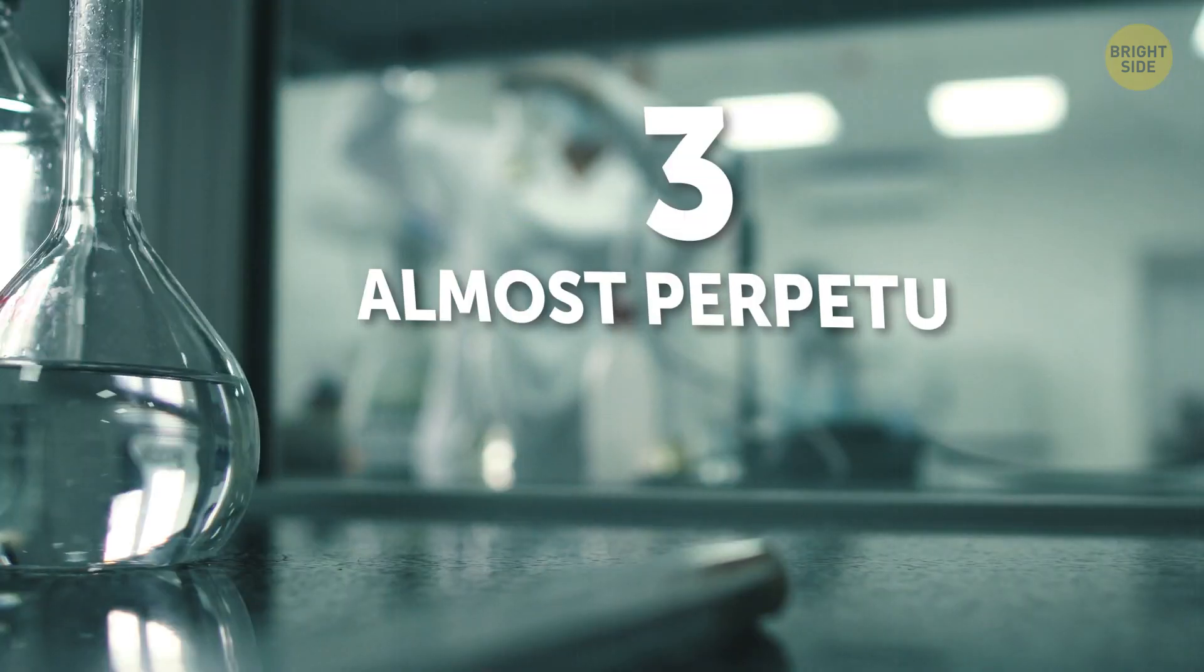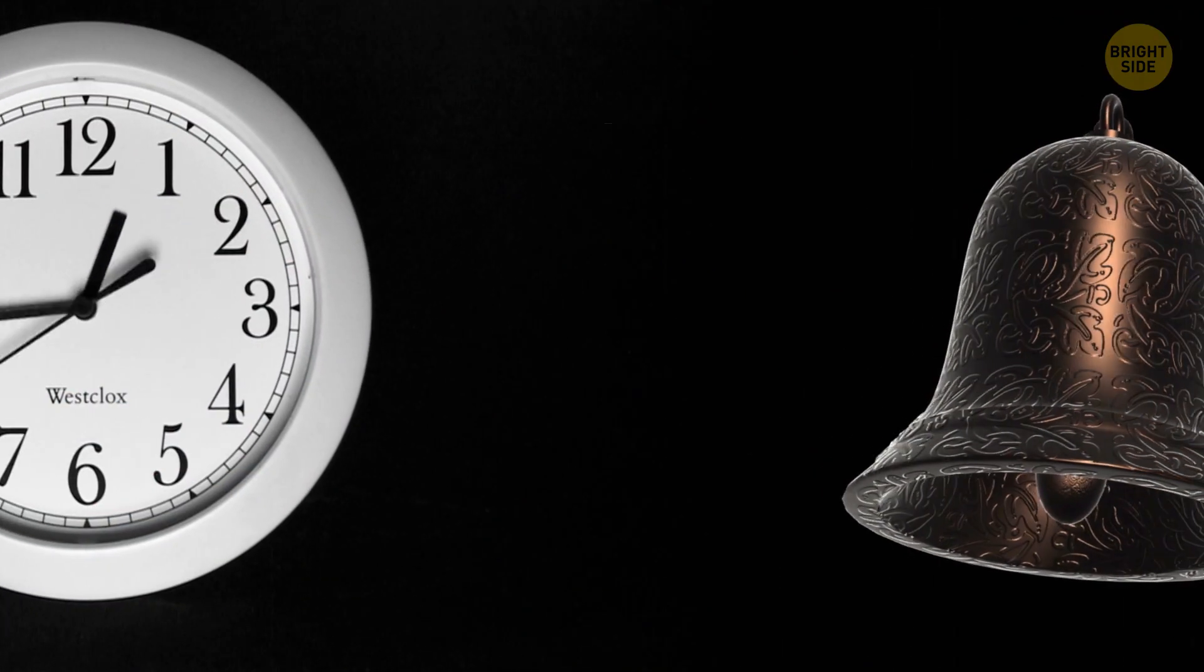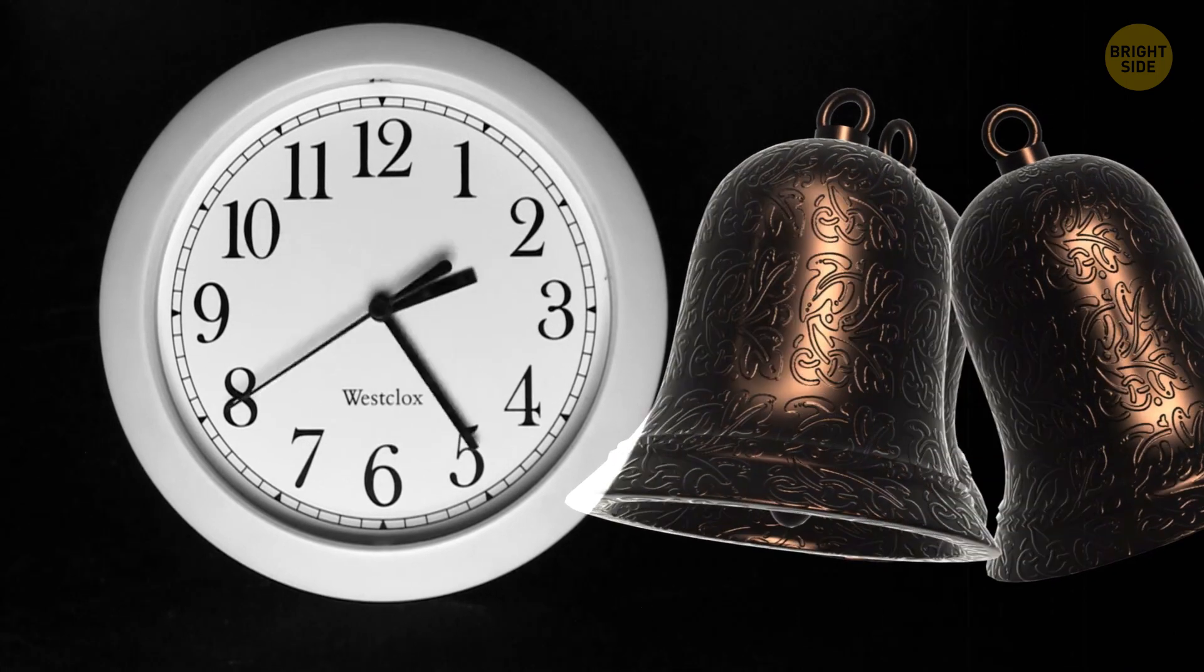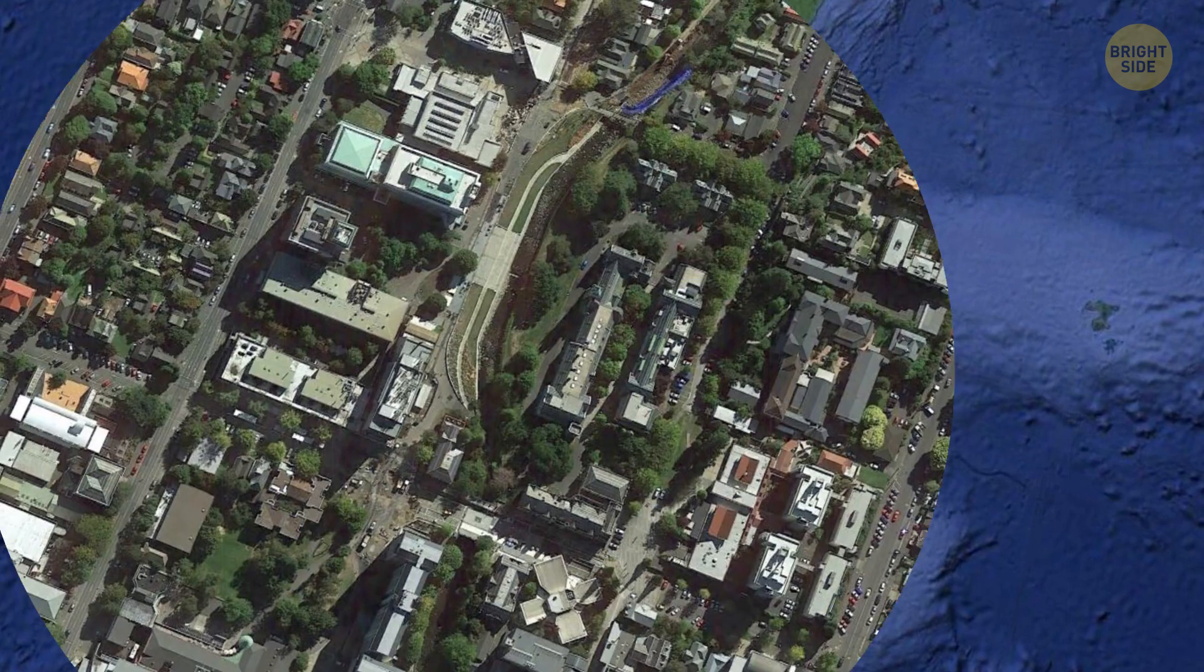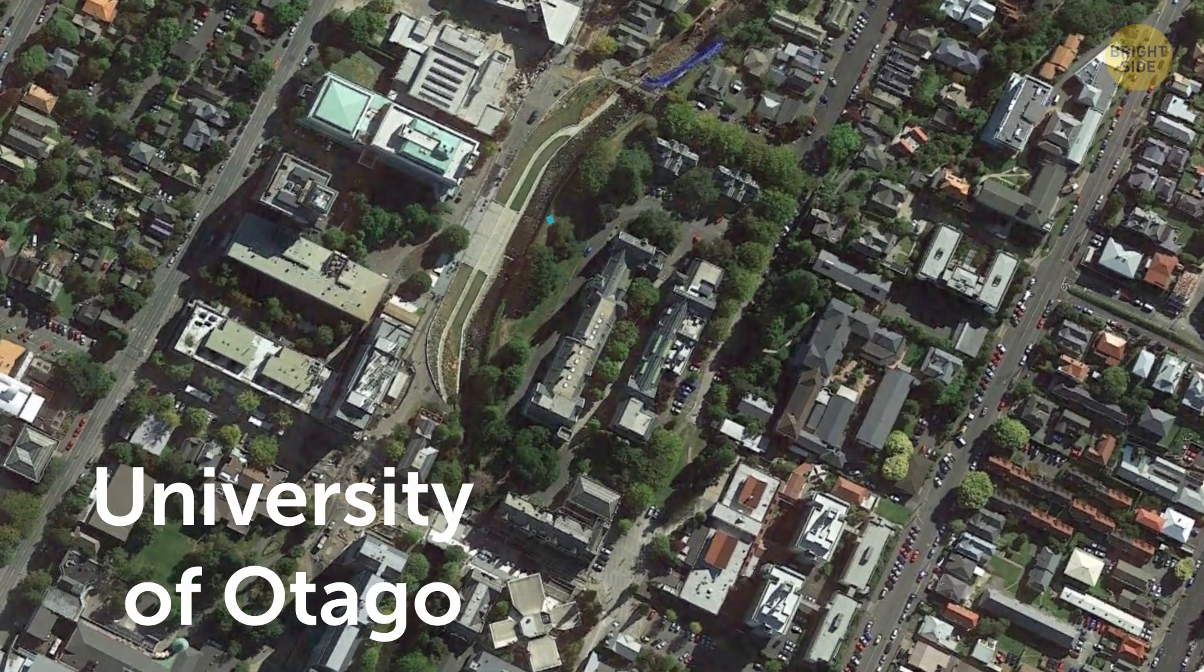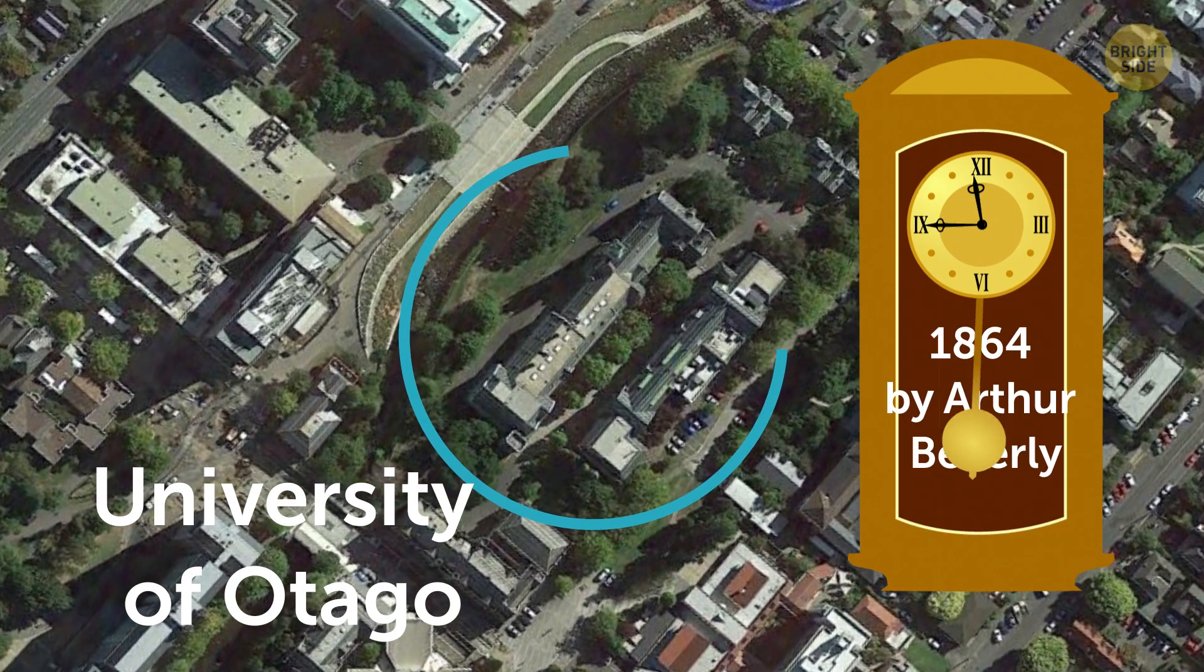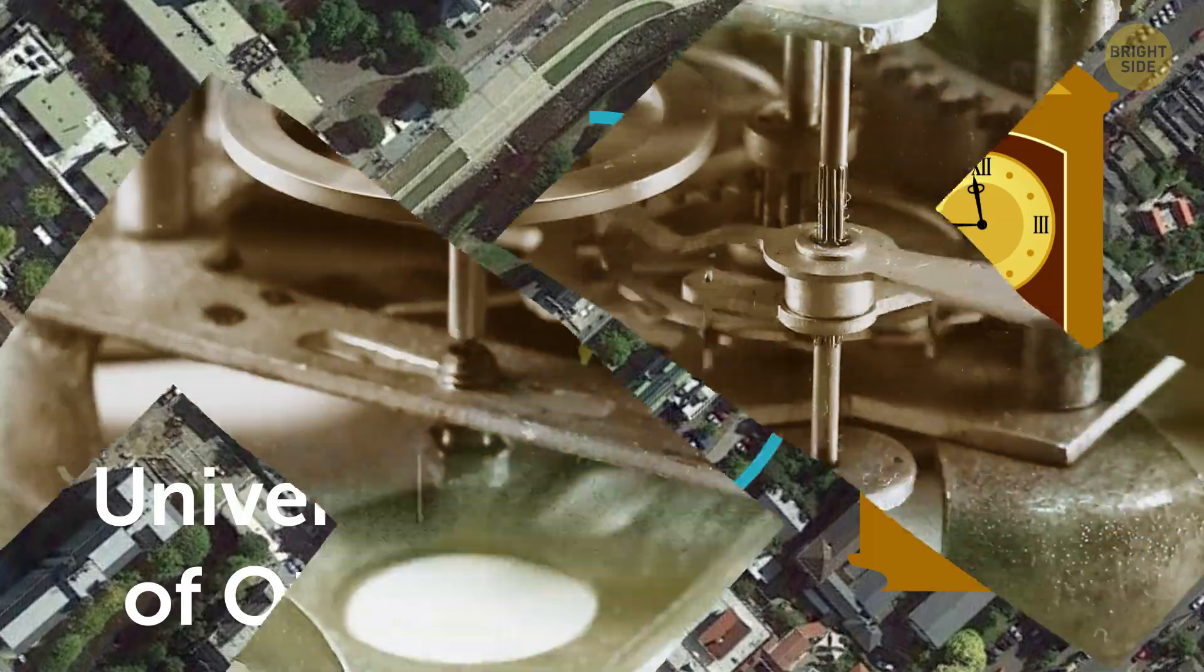Almost perpetual clock. If someone decides one day to attach the endless bell to these clocks, that would be the cruelest invention in the history of cruelty. But fortunately, this clock device stands in the University of Otago in New Zealand. It hasn't been wound since it was made in 1864 by Arthur Beverley and is almost never stopped to this day.